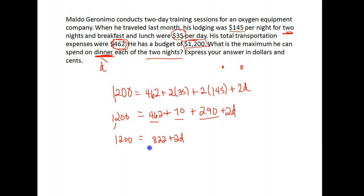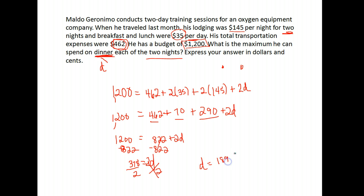We want to solve for d, so we subtract 822 from both sides. We get 2d equals $378. Our last step — we have 2 times d, so we divide both sides by 2. We get d equals $189. So he could spend $189 a night on dinner and still be within his budget.